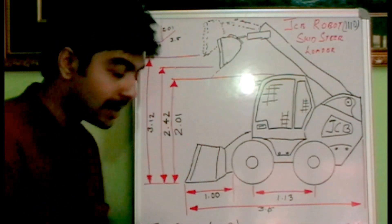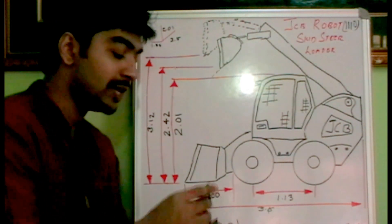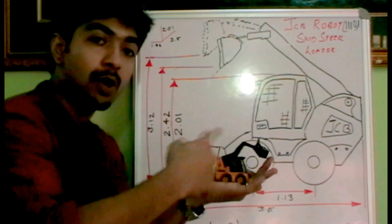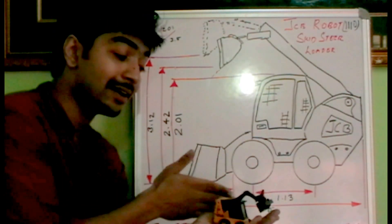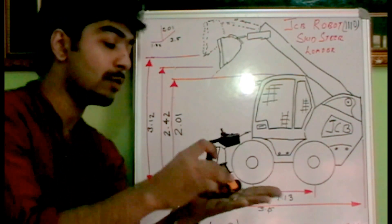So why is it called a skid steer loader? The name itself implies it can skid and steer. That means these tires can be independently controlled. The left side tires when it rotates in clockwise direction or forward, the right side tires will rotate in anticlockwise direction. So what makes the robot to skid?